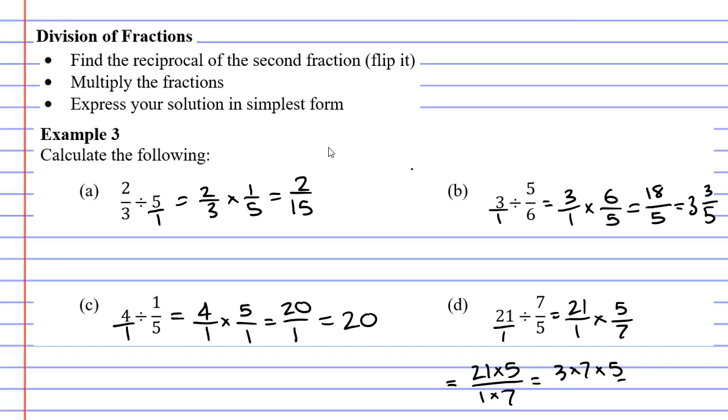You'll notice that we've got a seven above and below. When that happens I can cancel them, which is just going to make my life a little easier, because if I do the top of the fraction three times five is fifteen, and at the bottom of the fraction I get just the number one, and fifteen over one is just our whole number, fifteen.